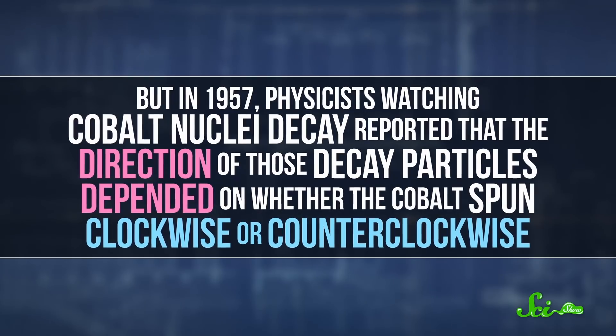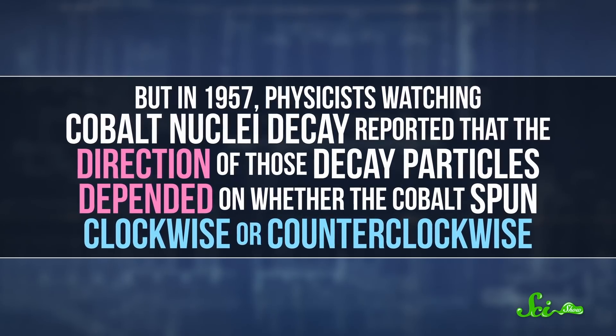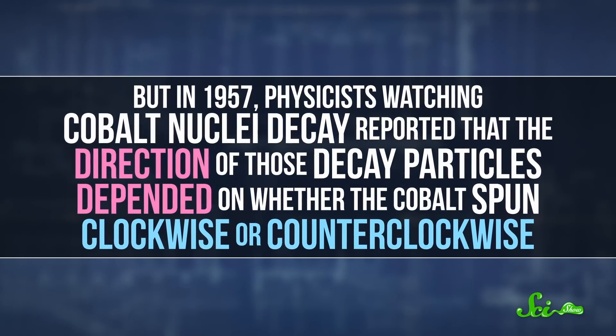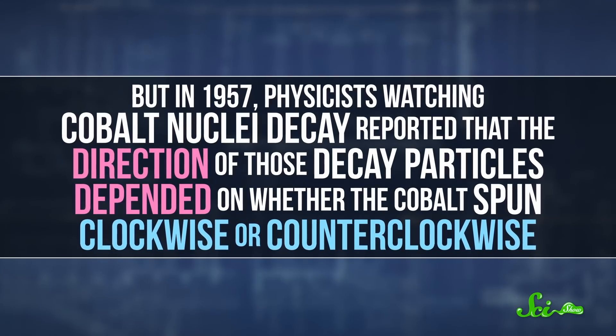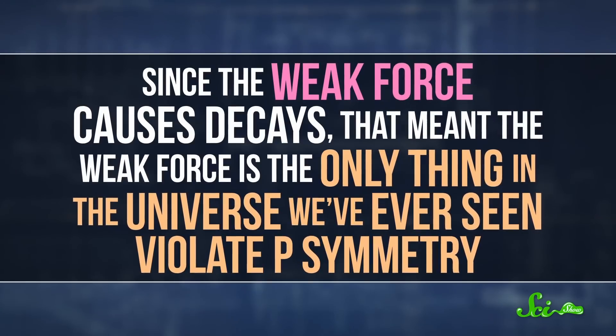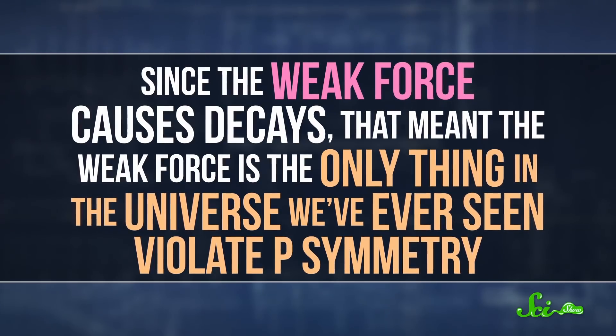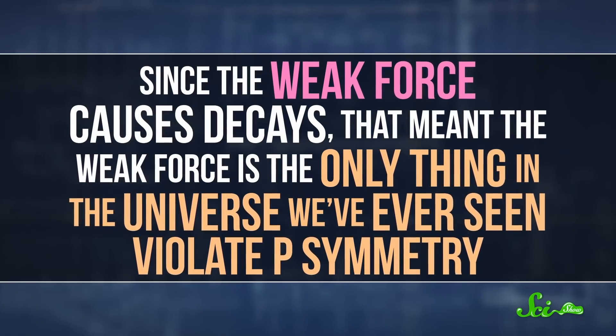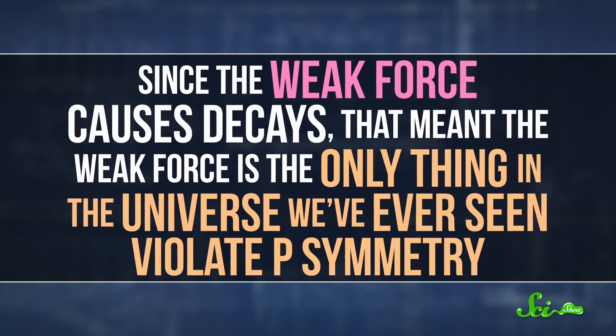But in 1957, physicists watching cobalt nuclei decay reported that the direction of those decay particles depended on whether the cobalt spun clockwise or counterclockwise. And since the weak force causes decays, that meant the weak force is the only thing in the universe we've ever seen violate P-symmetry.